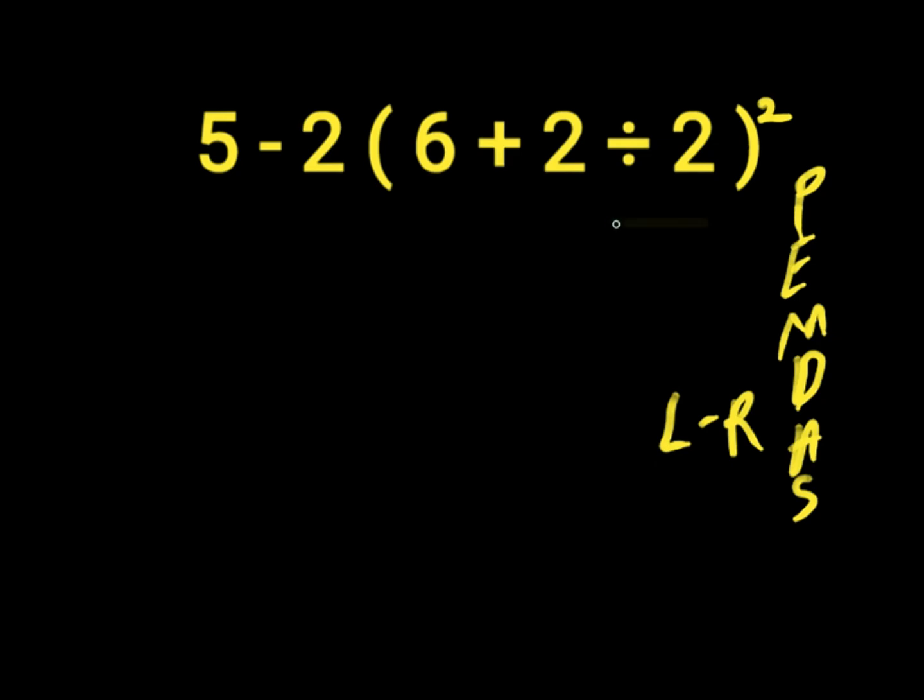So 2 divided by 2 will give us 1. Then we'll put down our 1. We'll have 6 plus 1. Then we'll put it in our exponent.